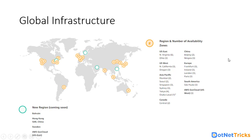In other regions: US East has North Virginia and Ohio; US West has North California and Oregon, each with three availability zones. In Asia Pacific, Mumbai has two availability zones; Seoul in Korea has two, plus one local zone; Singapore has three; Sydney, three; Tokyo, four; Osaka in Japan is a local region with one; Central Canada has two. In China, there are two regions — Beijing with two availability zones and Ningxia with three.